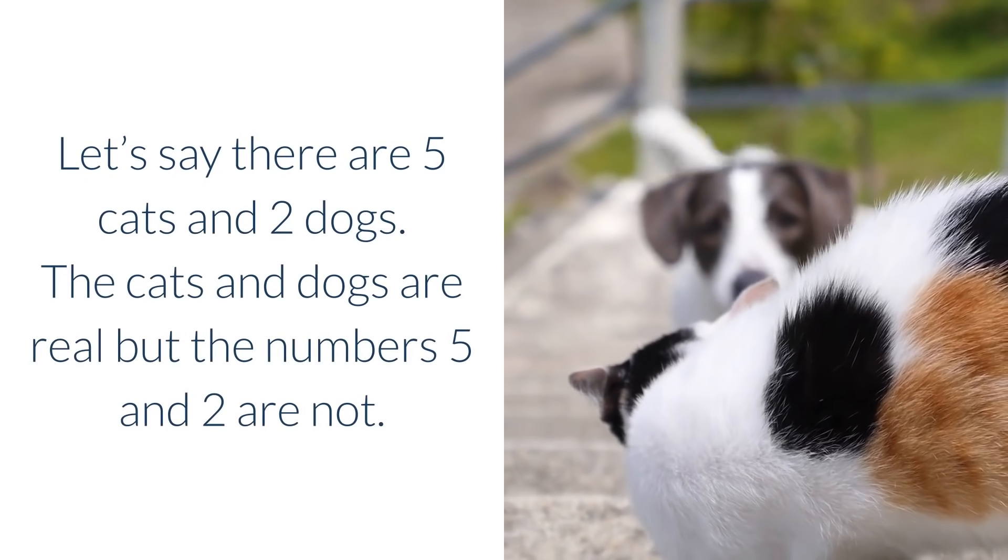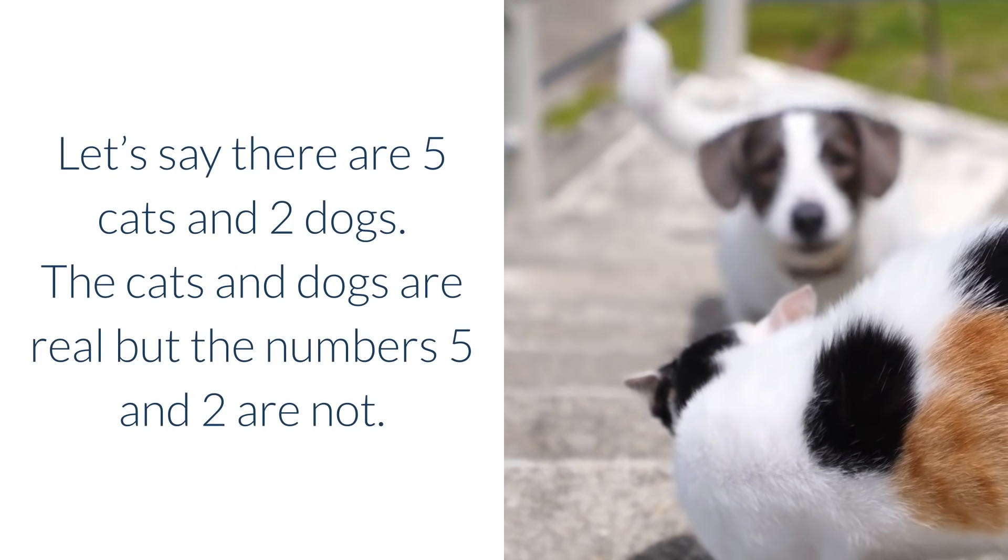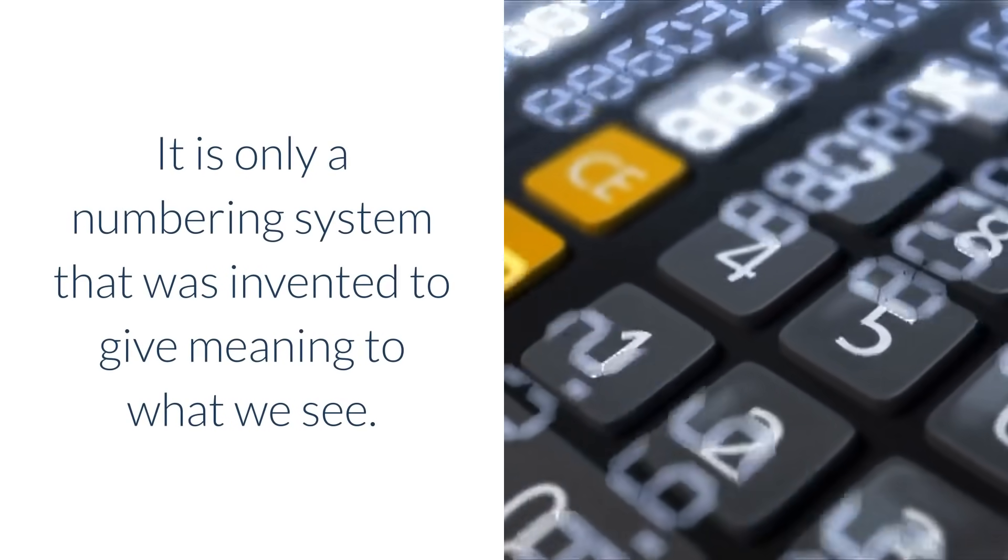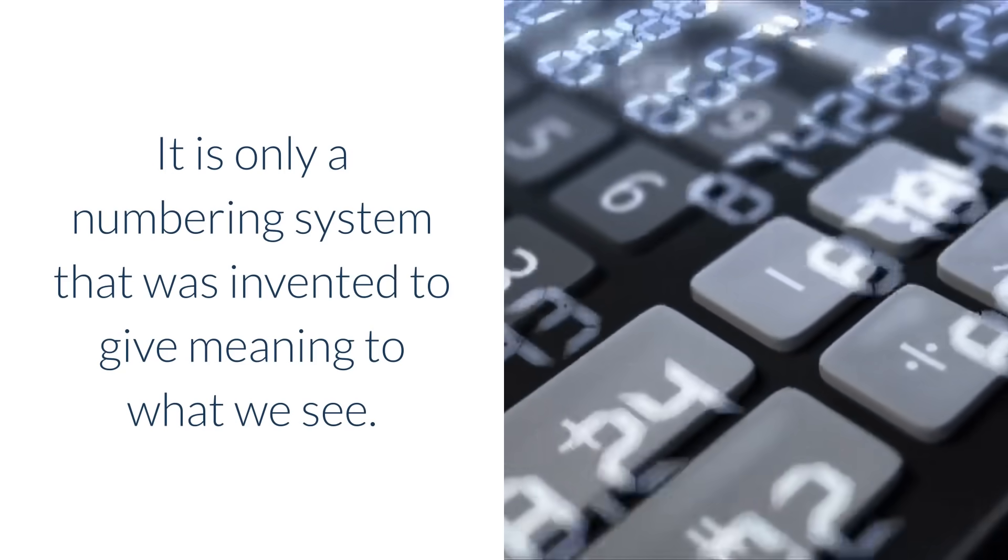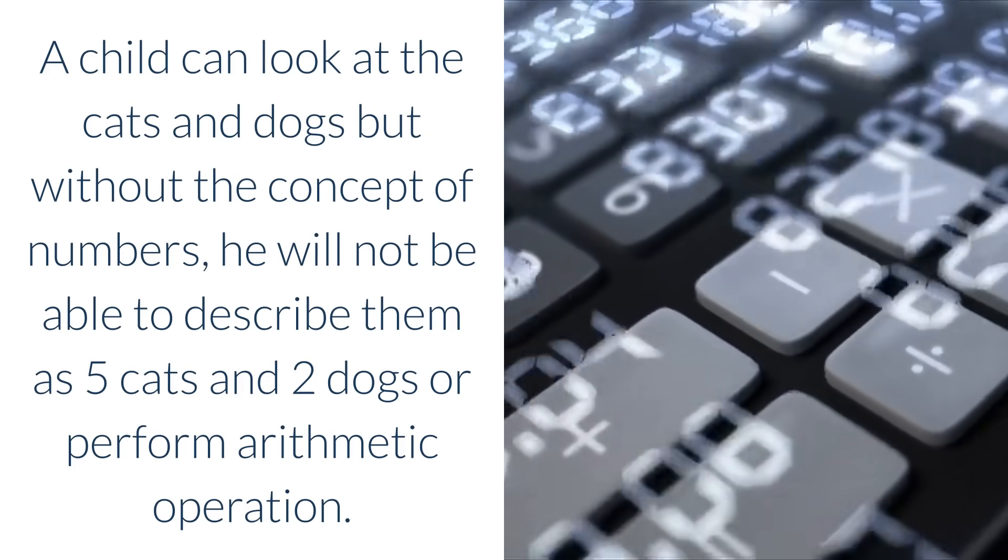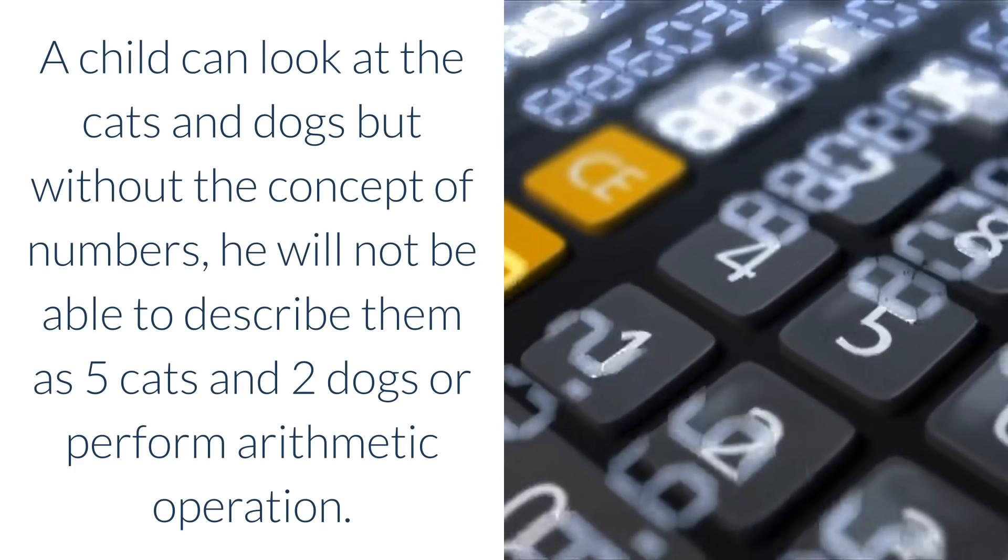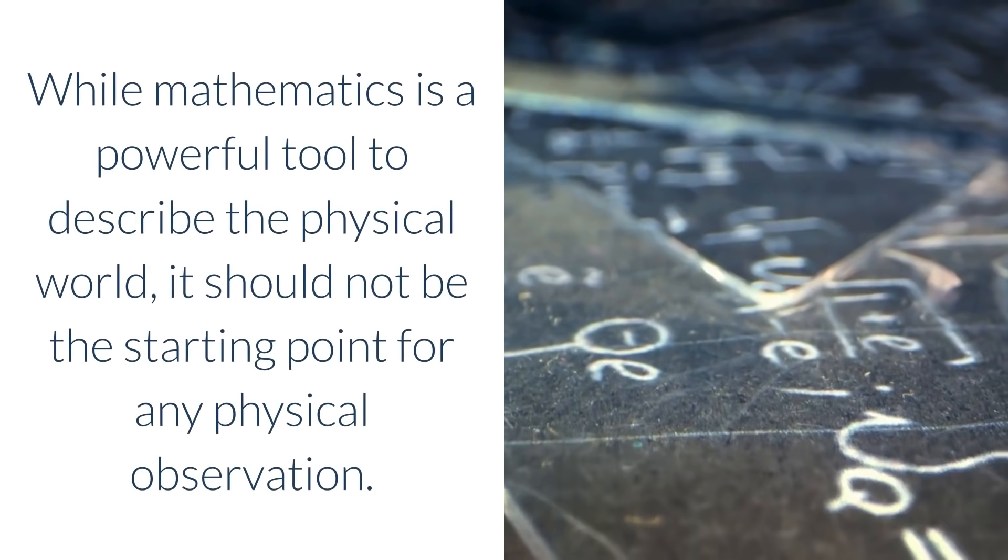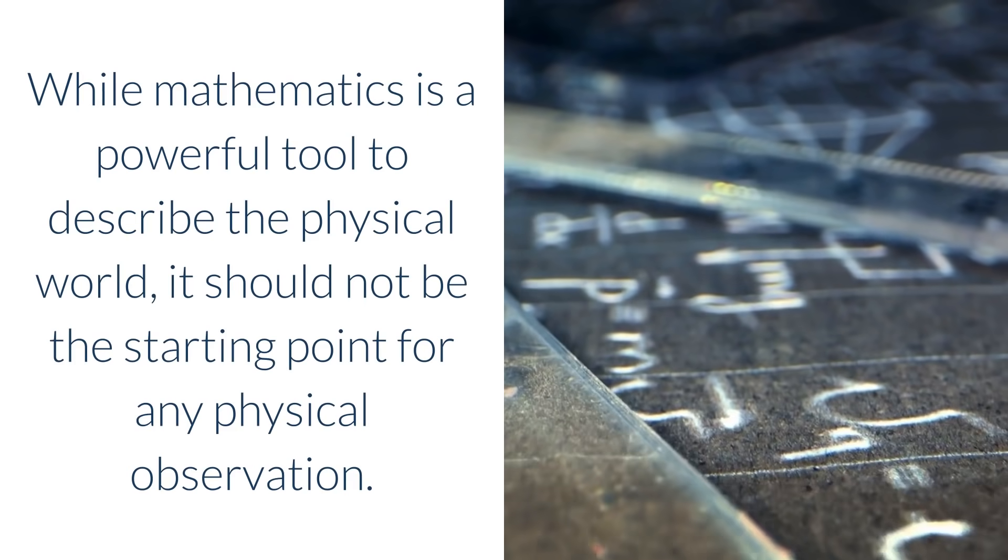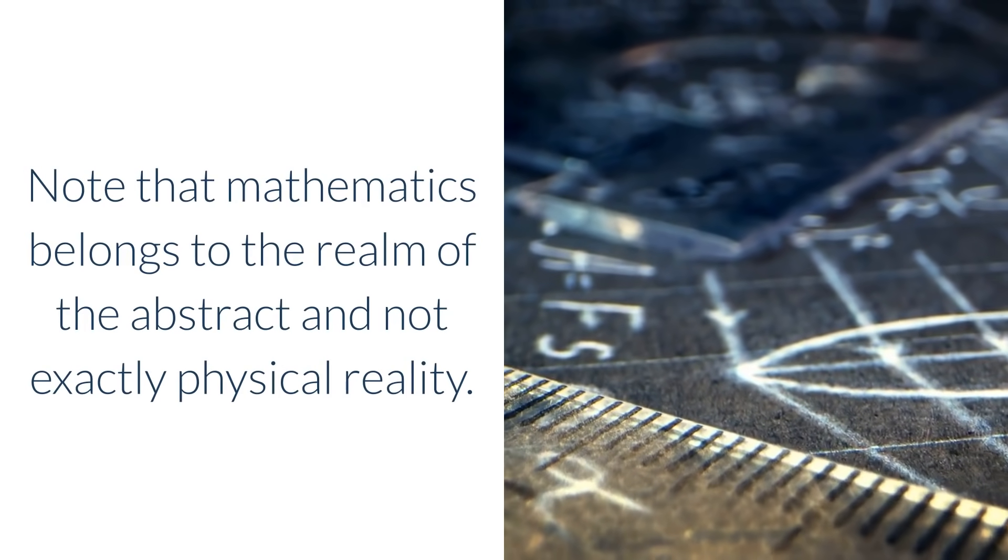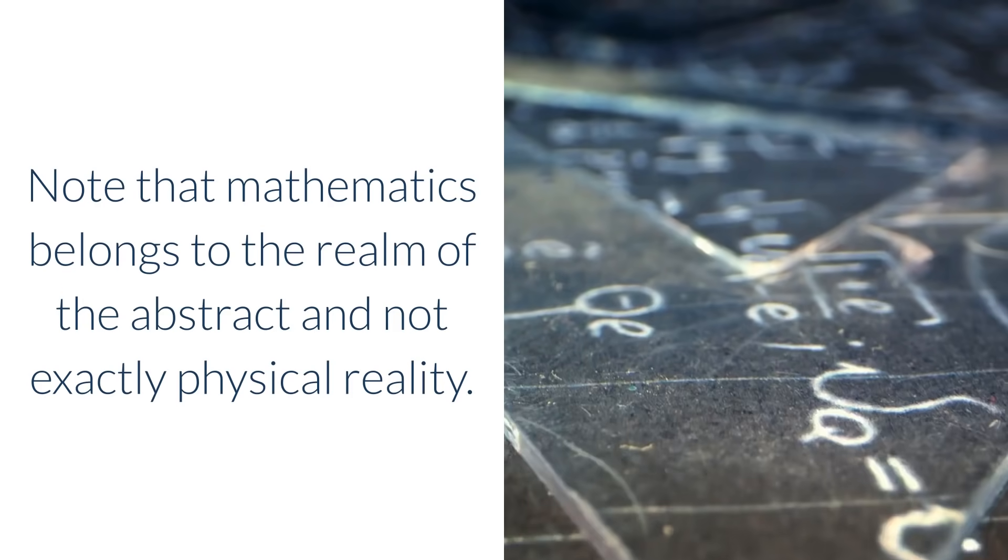Let's say there are five cats and two dogs. The cats and dogs are real but the numbers five and two are not. It is only a numbering system that was invented to give meaning to what we see. A child can look at the cats and dogs but without the concept of numbers, he will not be able to describe them as five cats and two dogs or perform arithmetic operation. While mathematics is a powerful tool to describe the physical world, it should not be the starting point for any physical observation. Note that mathematics belongs to the realm of the abstract and not exactly physical reality.